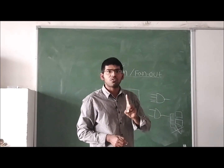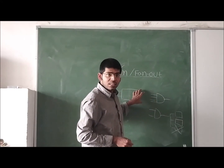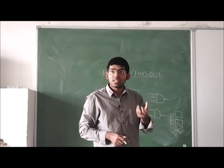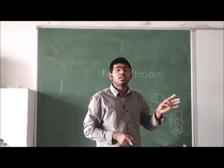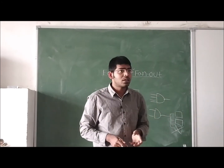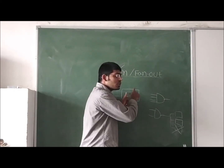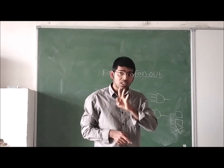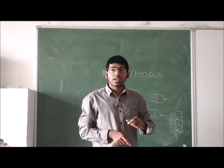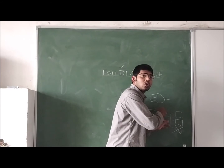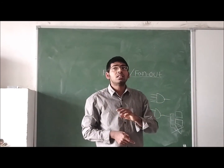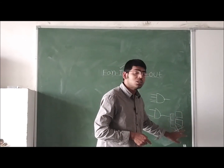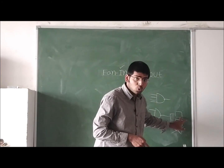So fan in is the number of inputs a digital logic circuit can accept. For example, if the fan in is four, then four inputs can be given to that digital logic circuit. If the fan out of a digital logic circuit is three, it can drive only three digital logic circuits. If we connect the output to four digital logic circuits, the output will not be properly driven to all four.